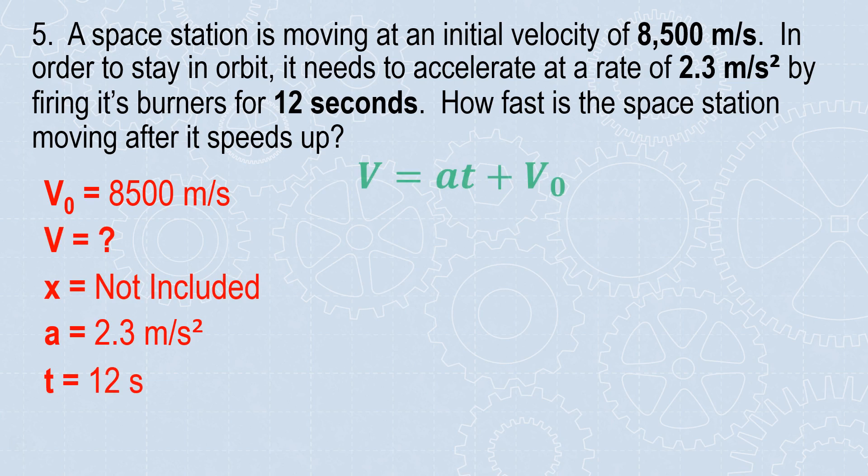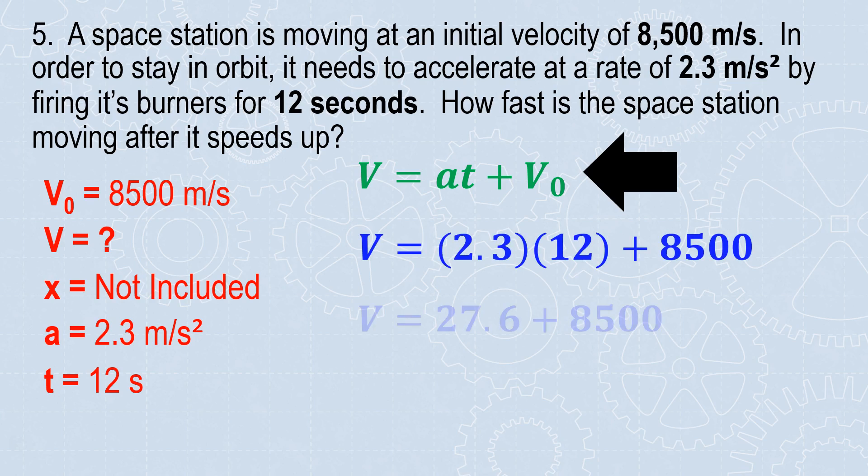So I'm looking for velocity. There's my equation. Substitute in. I'm going to substitute all my given values into parentheses. I'm going to multiply first: 2.3 times 12. Then I'm going to add that to 8,500. And I always finalize by checking my work and throwing a unit on there. Velocity is measured in meters per second.